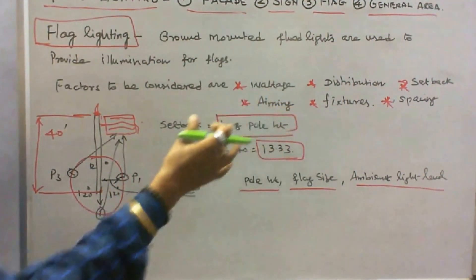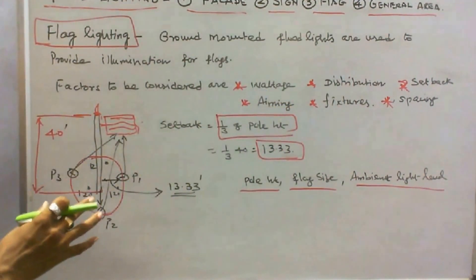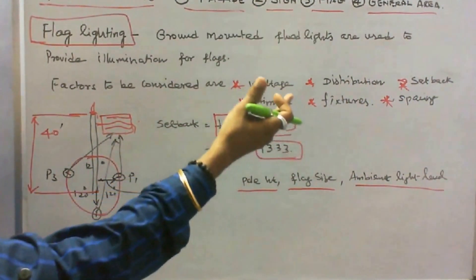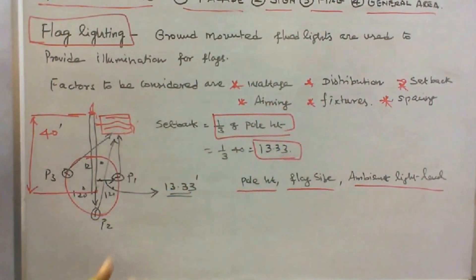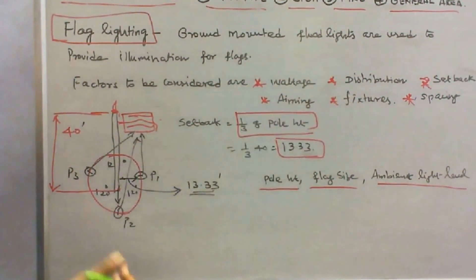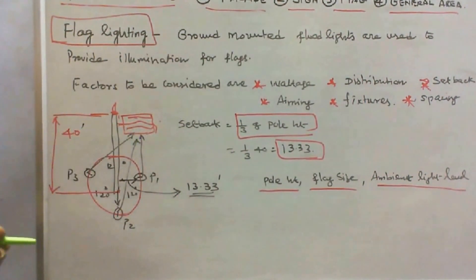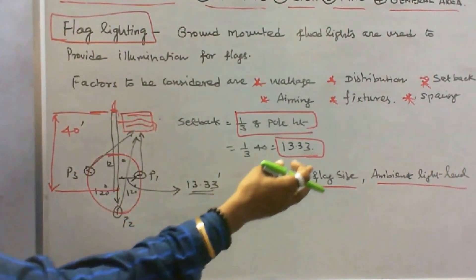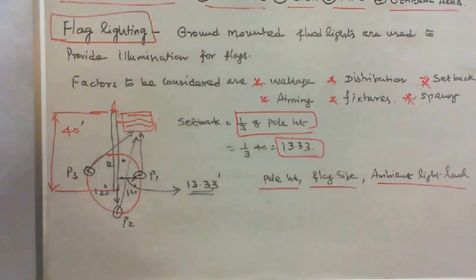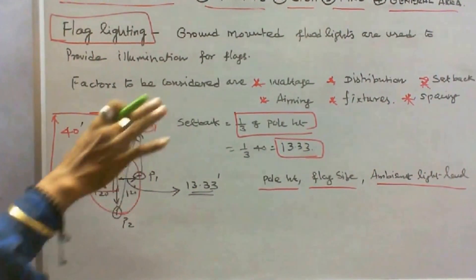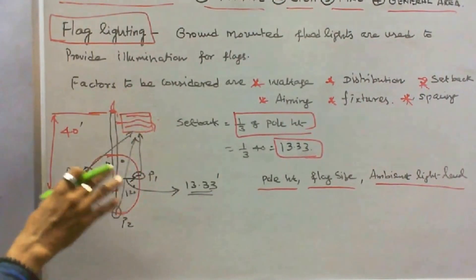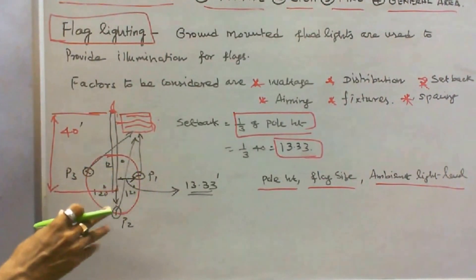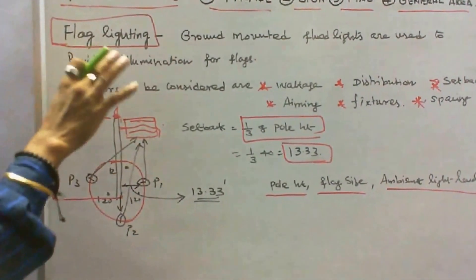Aiming is very important. When considering the aiming point, we must choose appropriate fixtures. Another factor is spacing — how many lights are required to illuminate the flag. For that, we consider the pole height, flag size, and ambient light level. When using three projectors with the same fixture type, the projectors should be placed 120 degrees apart. This is the flag lighting design.